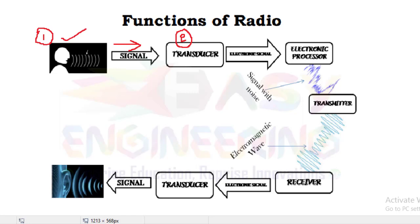The sound signal is taken by the second block, which is the transducer block. The transducer takes the sound signal as input and produces an electrical or electronic signal as output. For a real-time example, you can take a condenser mic as a transducer. When we are talking, the sound signal is absorbed by the condenser mic, and the diaphragm movement creates an equivalent electrical signal. This is how the sound signal is converted to an electrical signal.